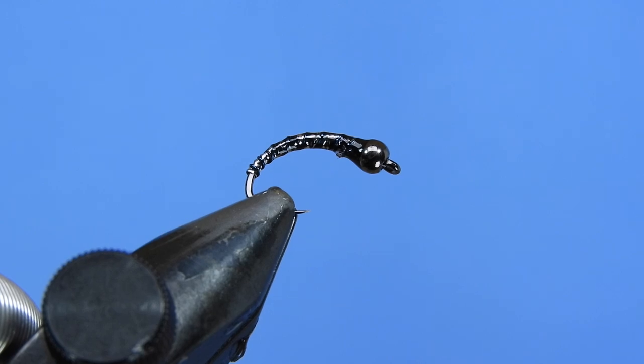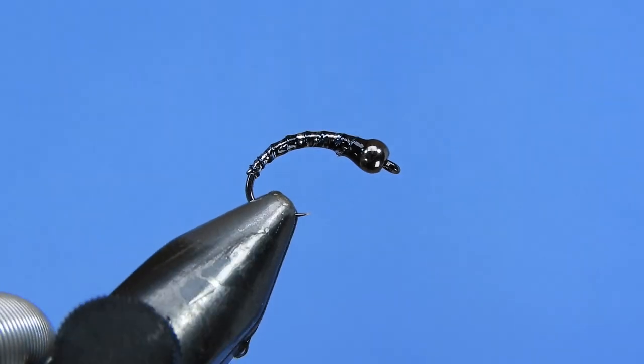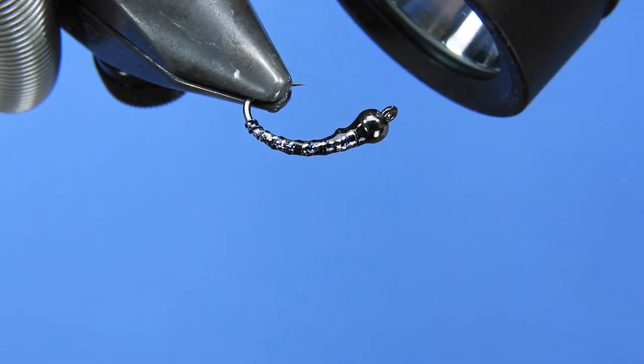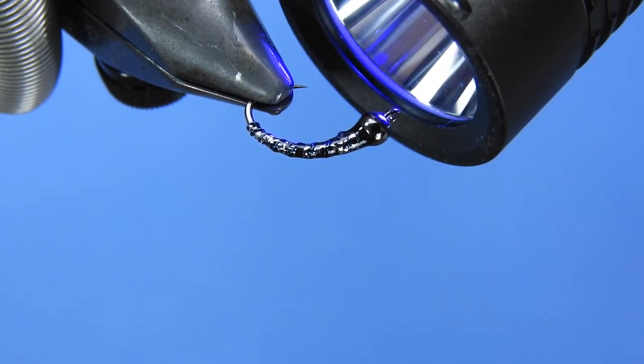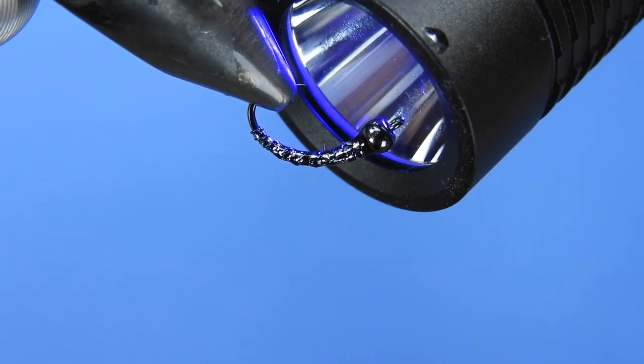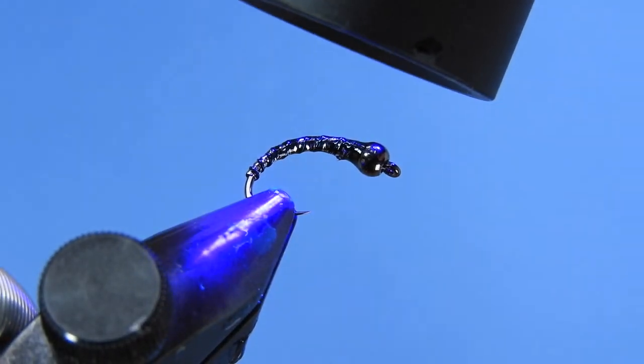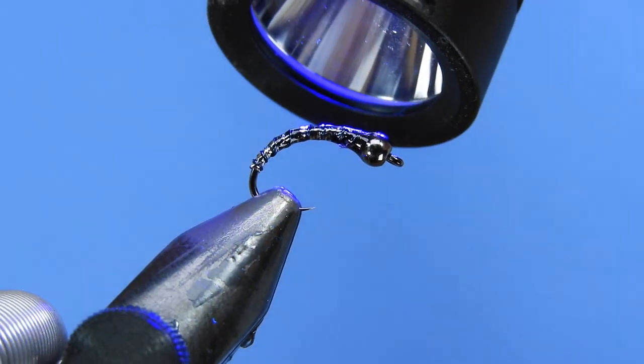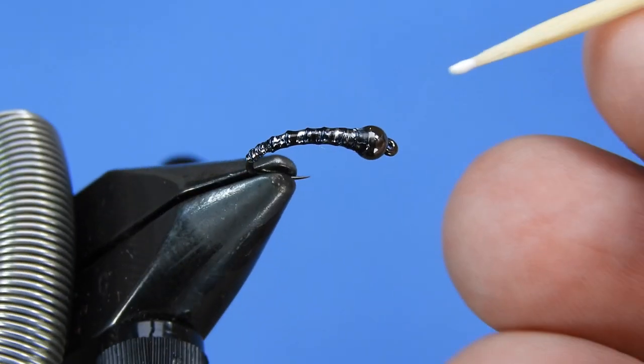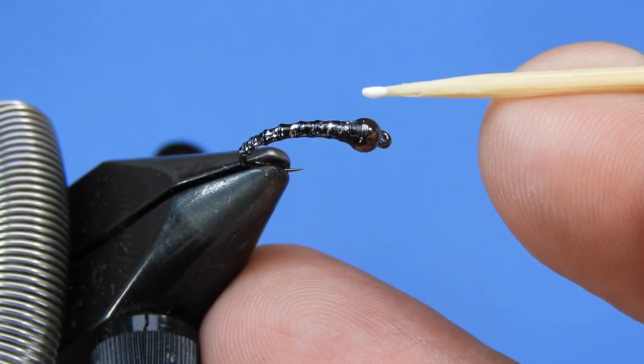You don't want to go too heavy on that. We just want to kind of make sure that we lock everything in place and then we'll zap it with the UV light, making sure everything's cured. Got a fresh battery in this one. Make sure that you do replace your batteries in your torches every once in a while.